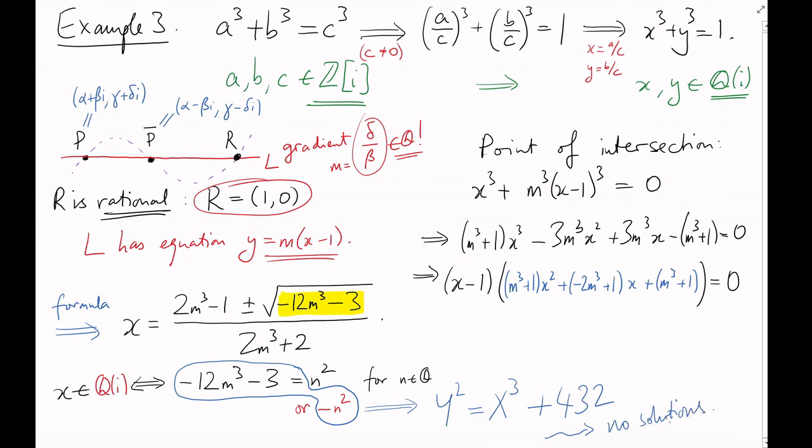We've shown that Fermat's last theorem for exponent 3 isn't just true over Z, it's also true over Z adjoin i. But it's not true over all rings like this.